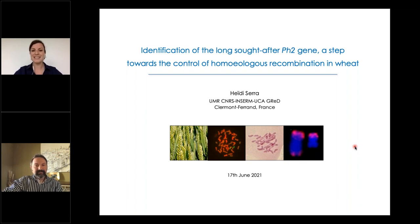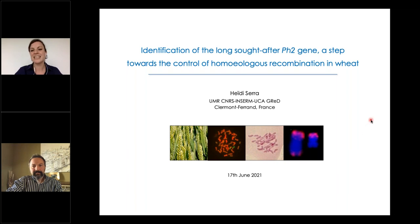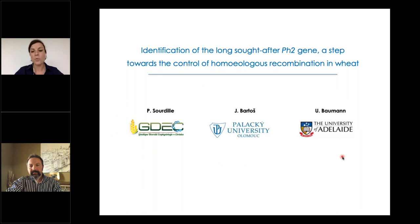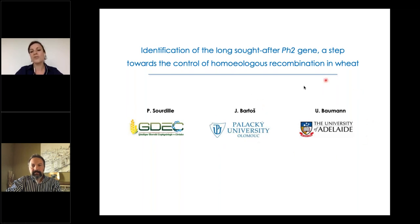Thanks to Hikmet and the organizers for this opportunity. The story I'll tell today was part of my postdoc at INRAE, focused on the identification of the PH2 gene involved in the control of homeologous recombination in wheat. This was a very collaborative work between three teams: the Pierre Sourdille laboratory at the GDEC unit in Clermont-Ferrand, France; the Jan Bartoš laboratory at Olomouc University in Czech Republic; and the Utay Borman lab in Adelaide, Australia.